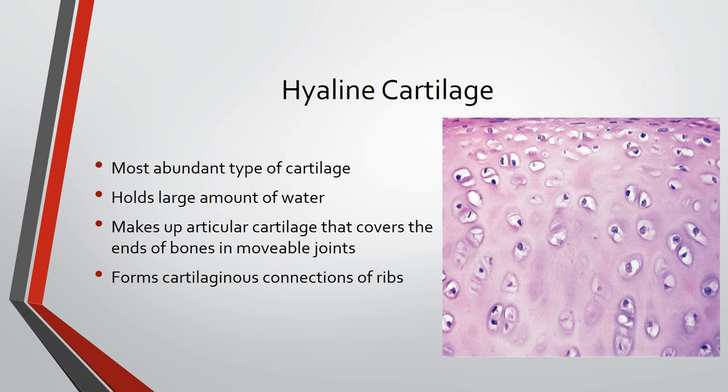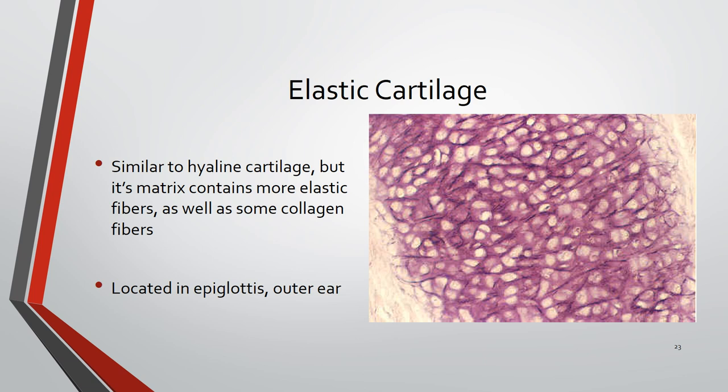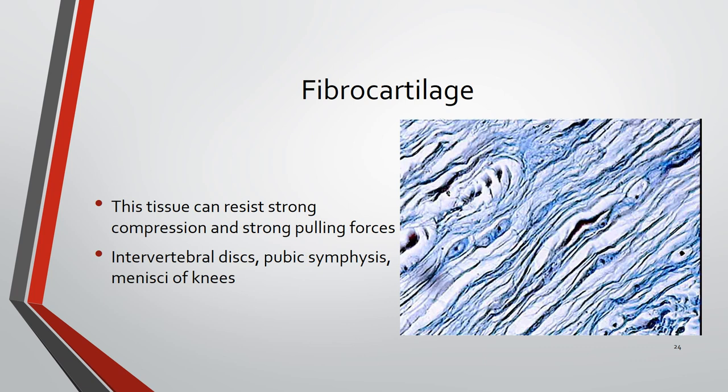To review from the slides: hyaline cartilage is the most abundant, holds a large amount of water, covers bone ends, and connects ribs to the sternum. Elastic cartilage is found in the outer ear and epiglottis — its most prominent fiber type is elastic, which allows the ear to return to its resting position after manipulation. Fibrocartilage is strong, resists compression and pulling forces, and is located between the vertebrae, at the pubic symphysis, and in the menisci of the knees.